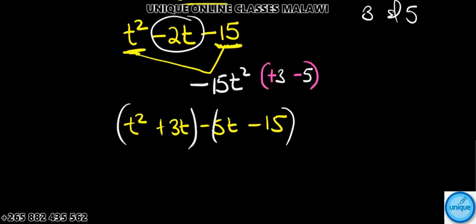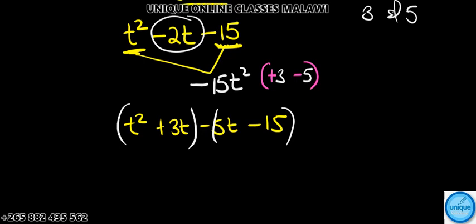Then plus t and t squared gives us t cubed, then plus 3t. We should also find another factor in the second bracket.